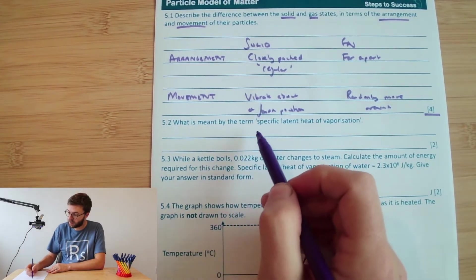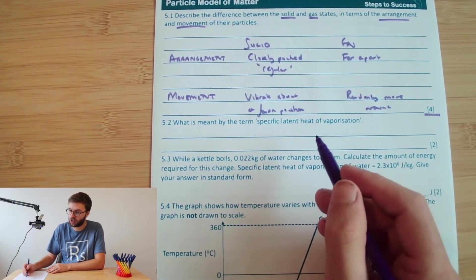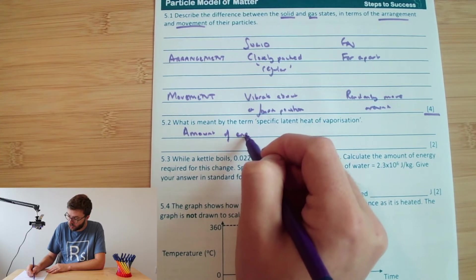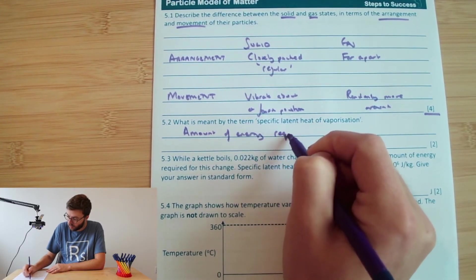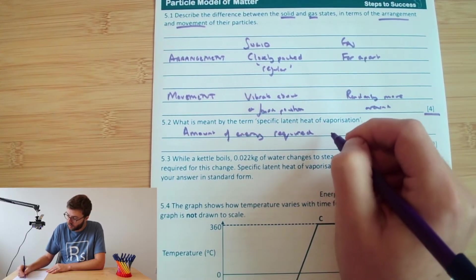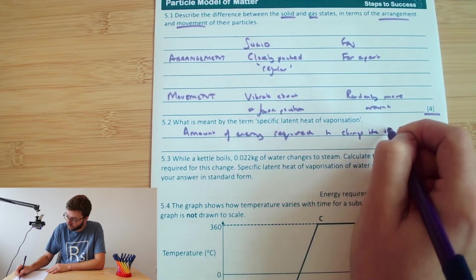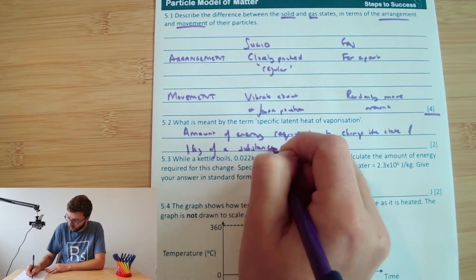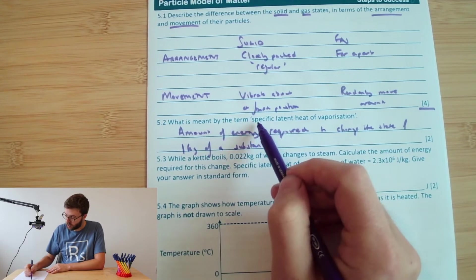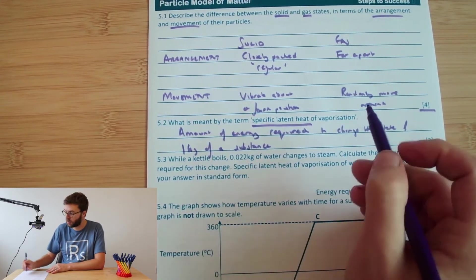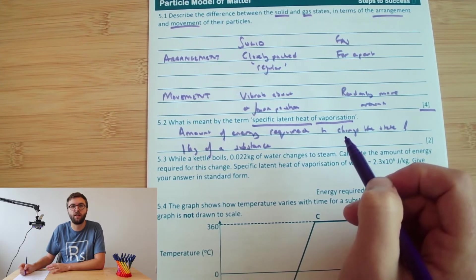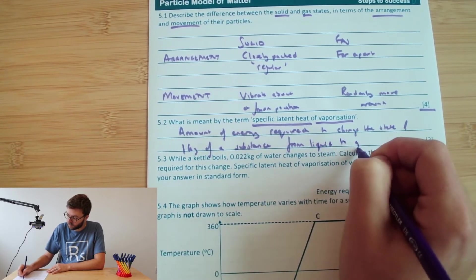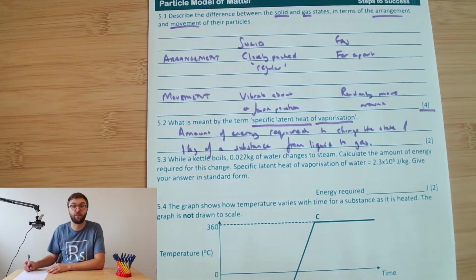Okay, what is meant by the term specific latent heat of vaporization? Again, this is just knowing our definitions. So the specific latent heat is the amount of energy required to change the state of one kilogram of a substance. So that's our definition for specific latent heat. That's going to be picking ourselves up one mark. And where it clearly says of vaporization, we need to think about the state change that's happening there. So that would be from liquid to gas. And that's where we're going to pick up our second mark.